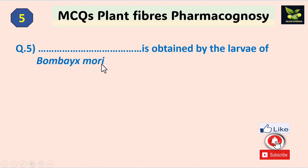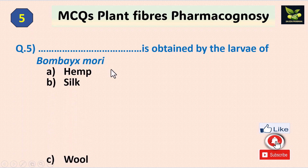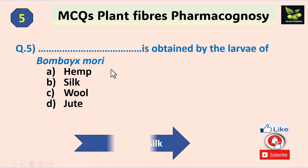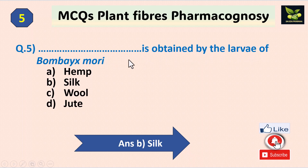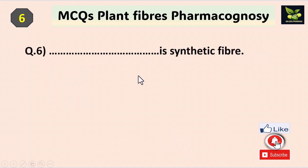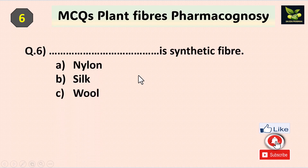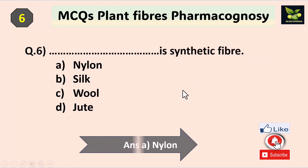Question five: which fiber is obtained from the larvae of Bombyx mori? The answer is silk, because silk is obtained from the cocoon from the larvae of Bombyx mori. Question six: which is a synthetic fiber? Options are nylon, silk, wool, and jute. Silk and wool are animal fibers, jute is a plant fiber, and nylon is a synthetic fiber.